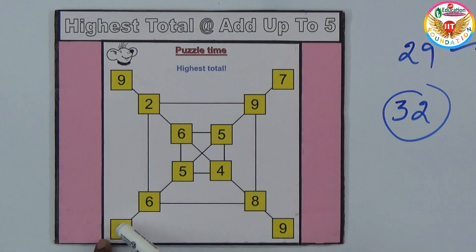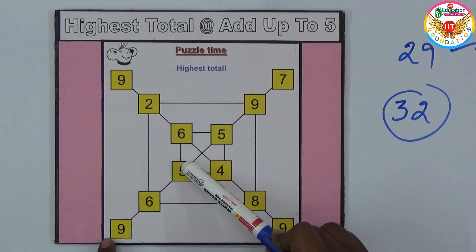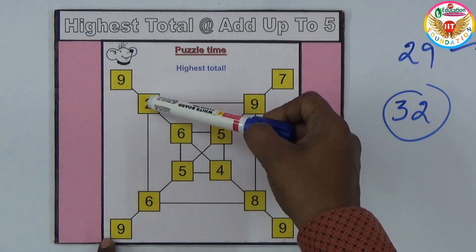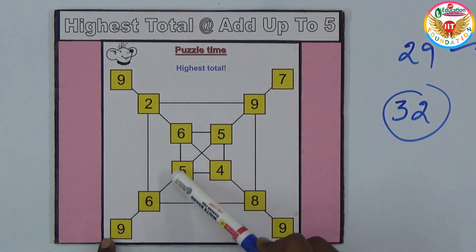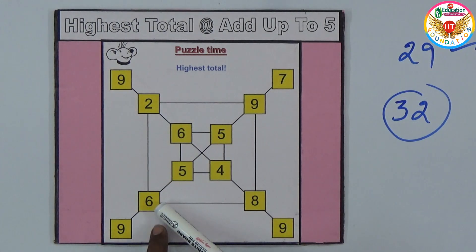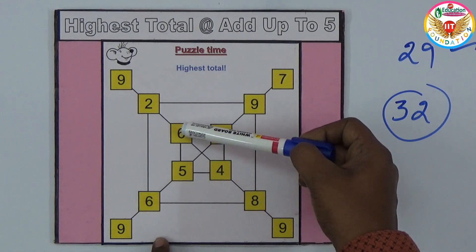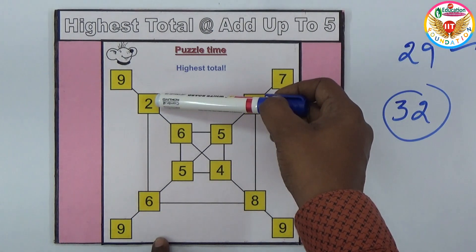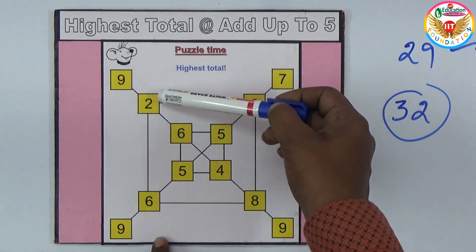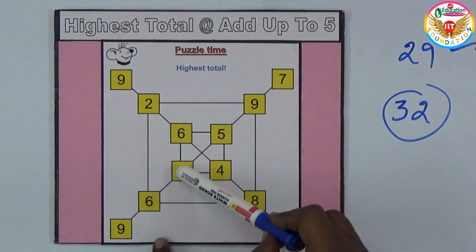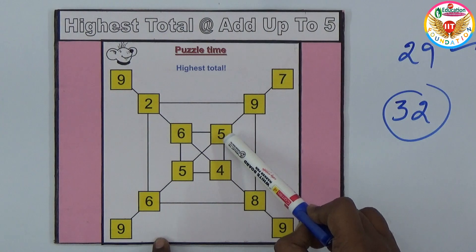You can go in this type. For example, if I go like 9, 6, 5, 6, 2 on this line only. If I take this way: 9 plus 6 is 15, 15 plus 5 is 20, 20 plus 6 is 26, 26 plus 2 is 28.